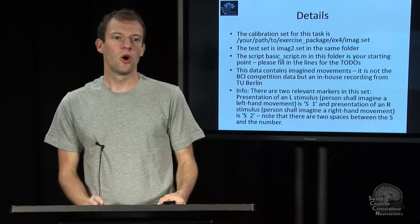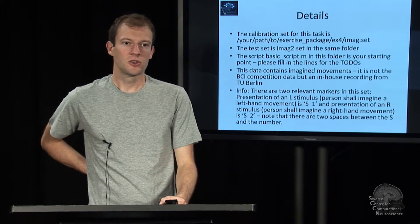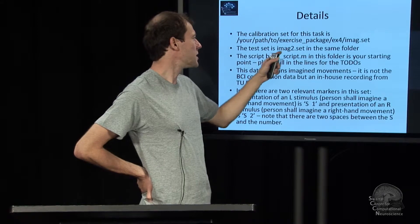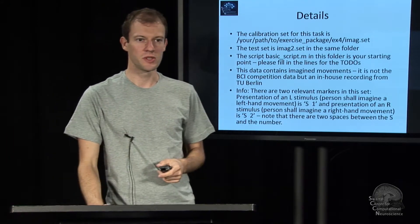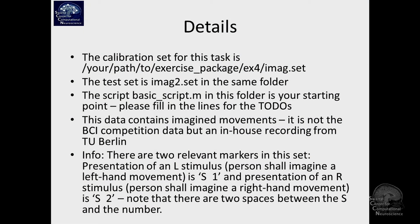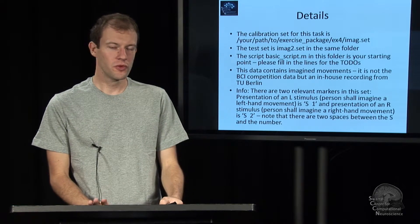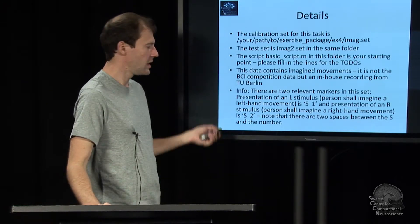There is a dataset for this exercise, which is called ex4 slash emac dot set, and there's an associated test set in the same folder called emac2 dot set. This stands for imaginary movements — pretty much the same kind of task discussed in the exercise where you script everything in MATLAB. There is a script in there called basic_script.m, and it has several to-do's: comment lines which say 'to do: this and that,' prompting you to implement various steps such as defining the approach, training the model, and so on. You are just filling in the to-do's and hopefully it runs.